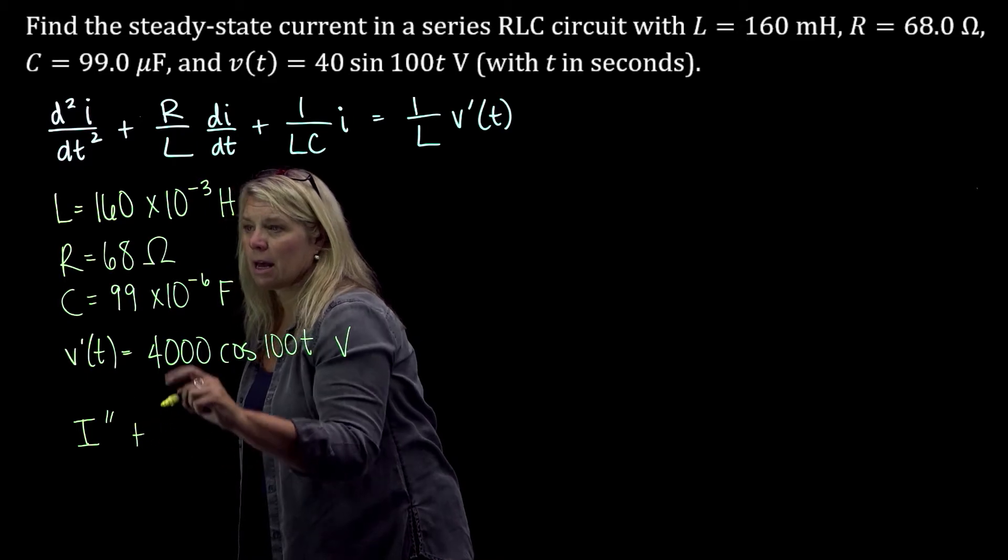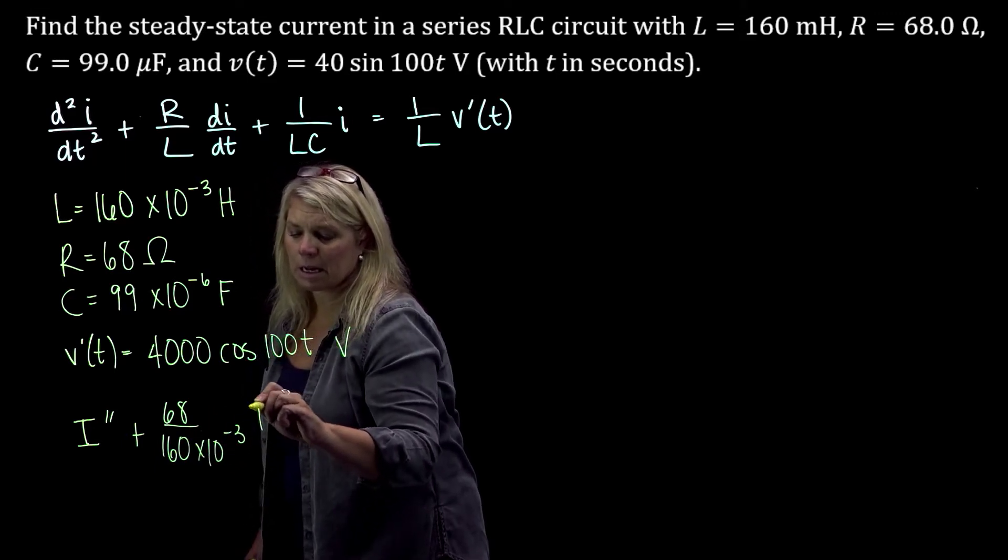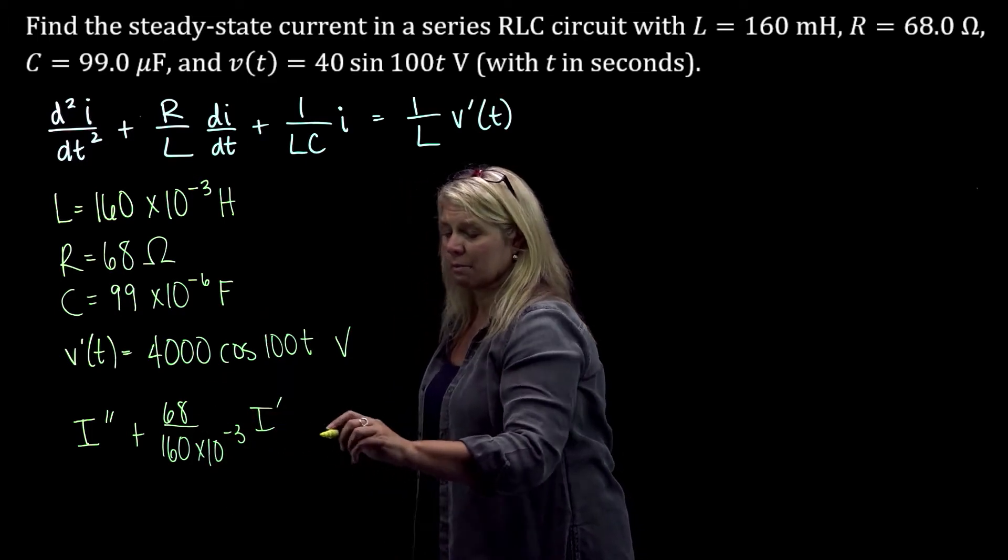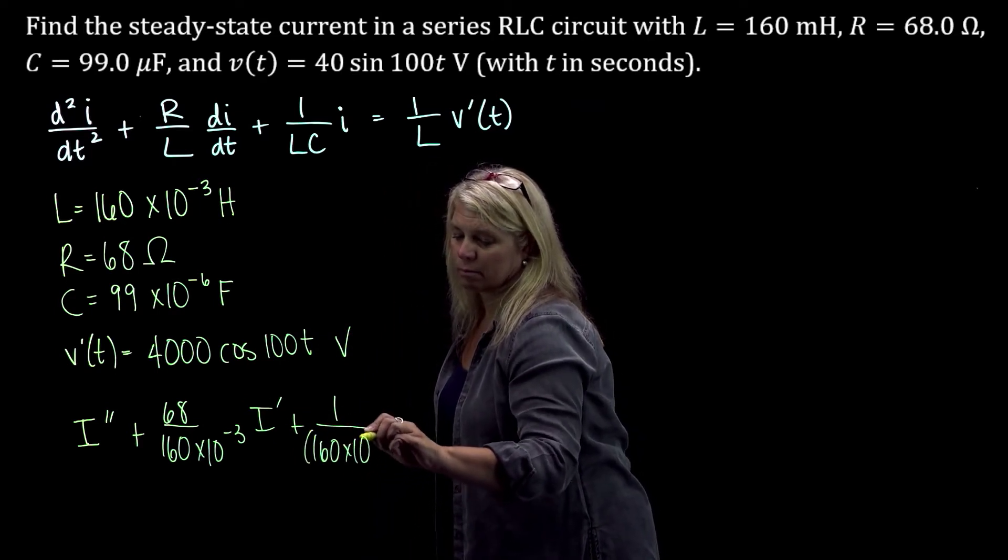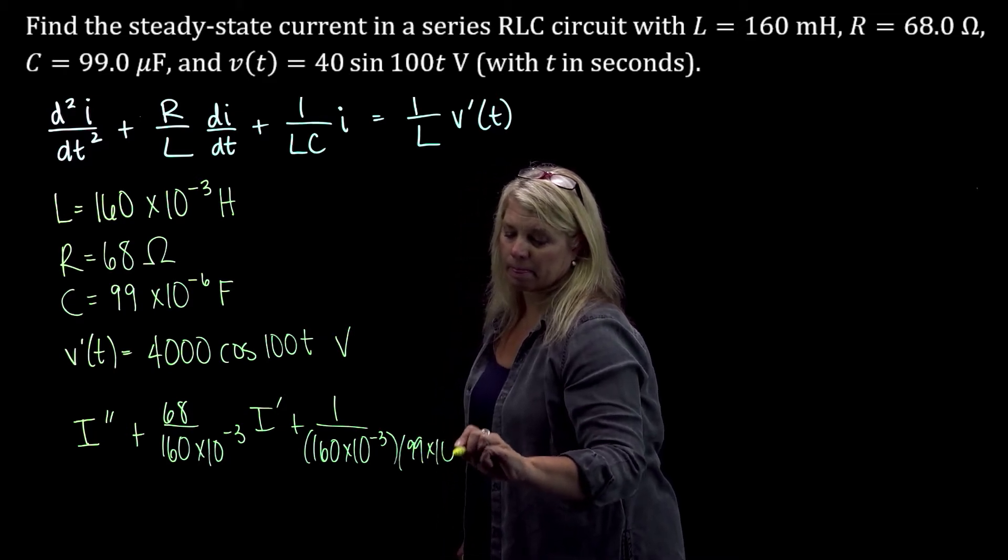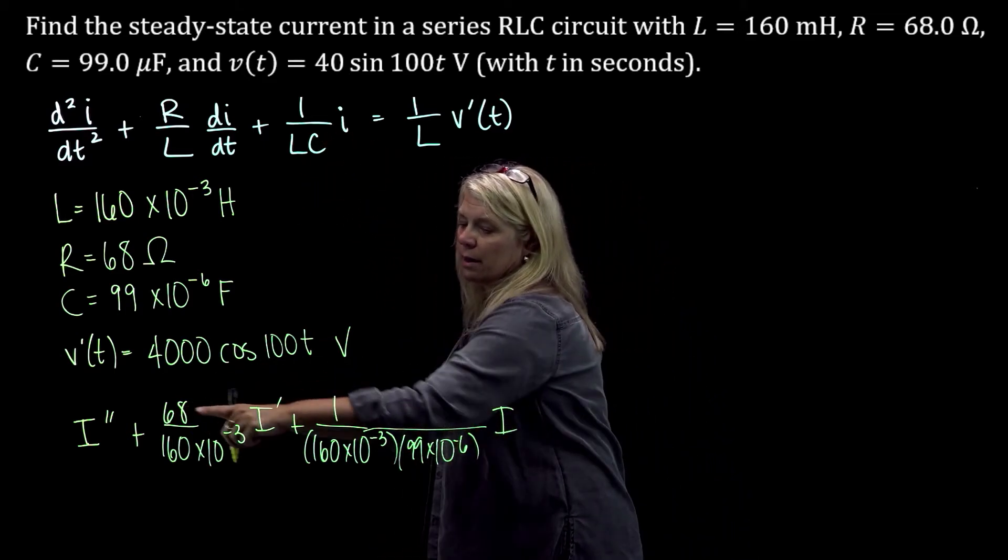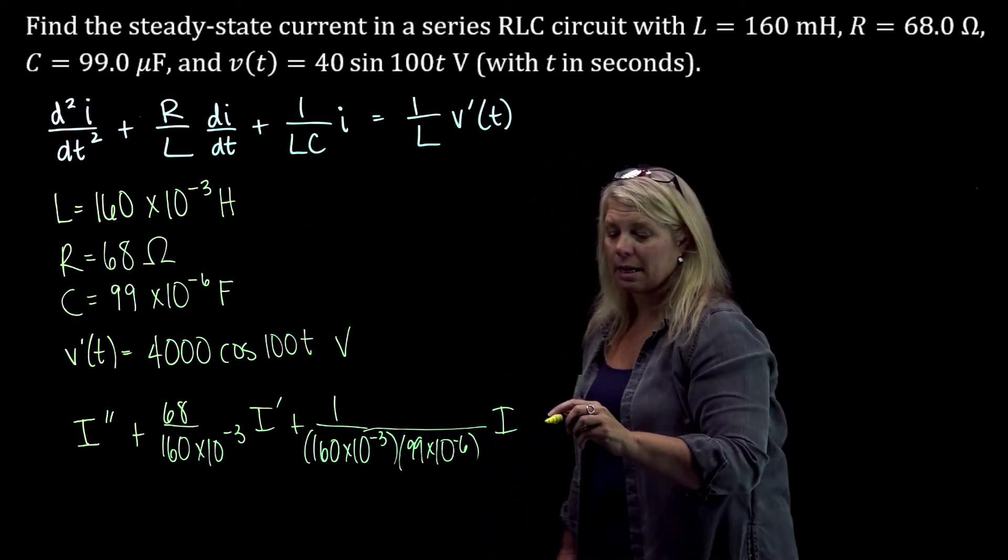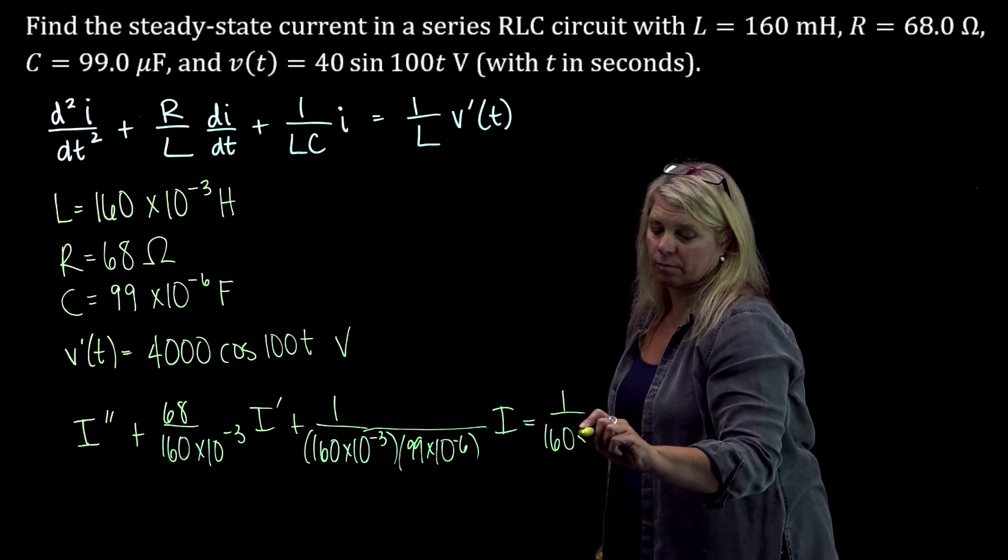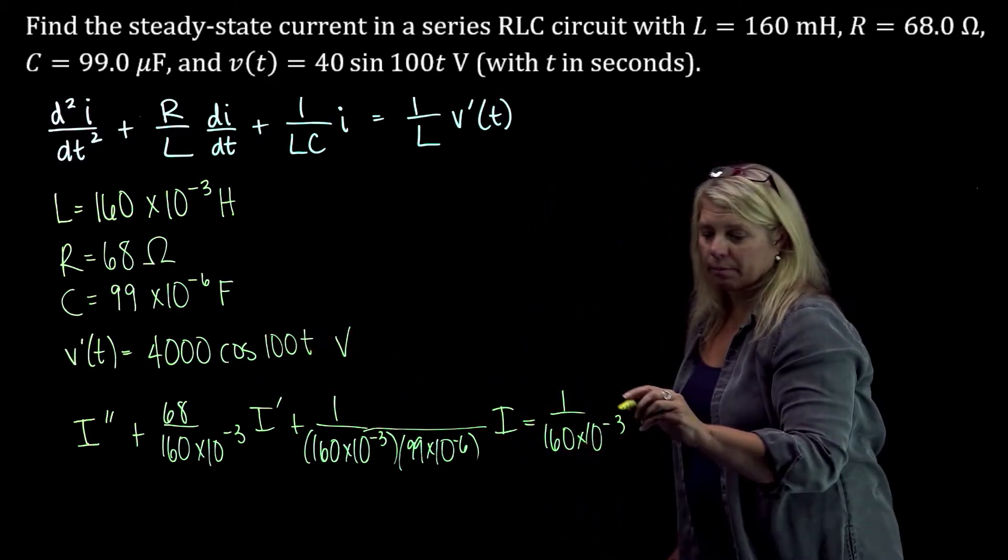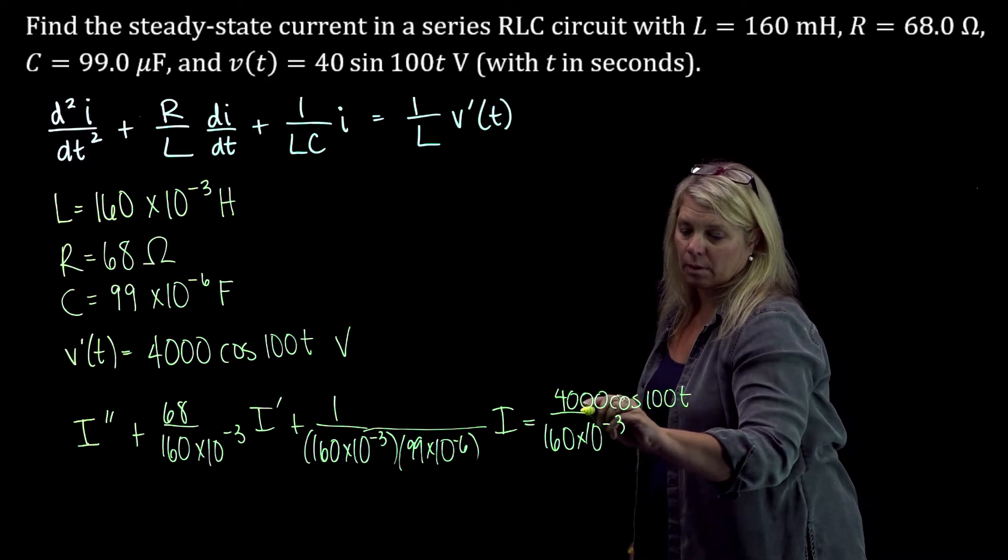So I double prime plus R over L, 68 over 160 times 10 to the negative 3 I prime. Of course, that simplifies some. Plus 1 over LC times I. All right. So here is our differential equation with I as the dependent variable and T as the independent variable. And then on the right-hand side of the equation, we've got 1 over L times my V prime. I'm just going to put that here on the numerator.